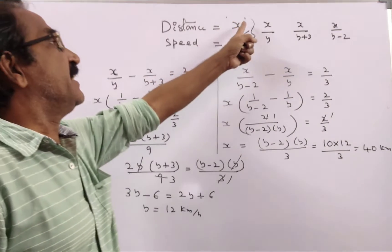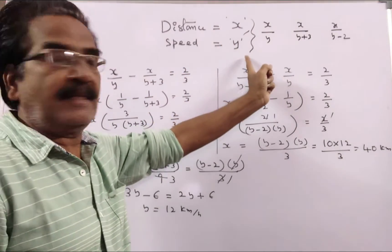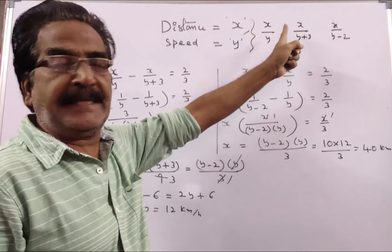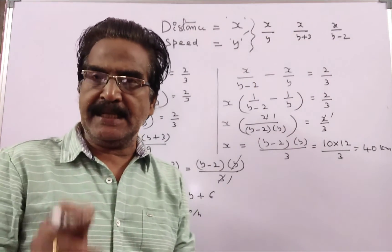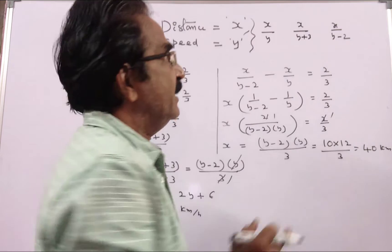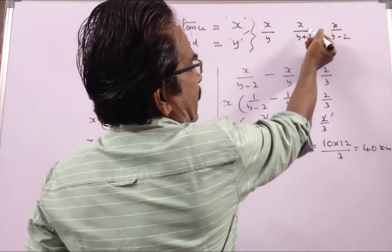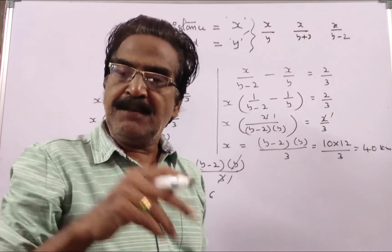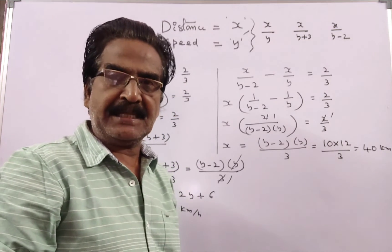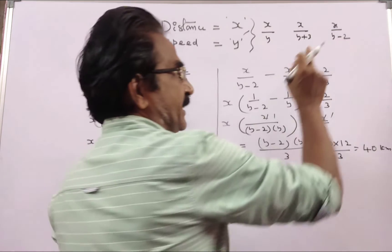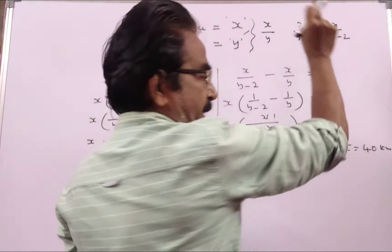See, friends, say distance is x and speed is y, then the normal time taken is x by y. If he moves at 3 kmh faster, then it takes him x by y plus 3. If he moves at 2 kmh slower, then it takes him x by y minus 2.